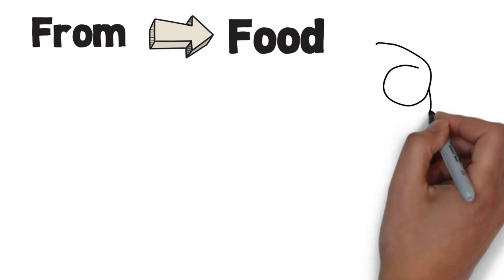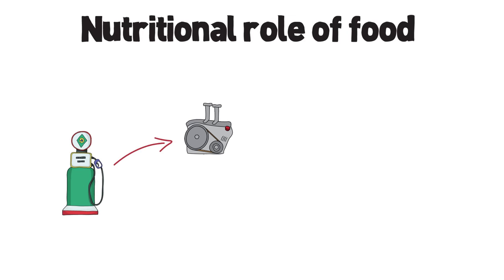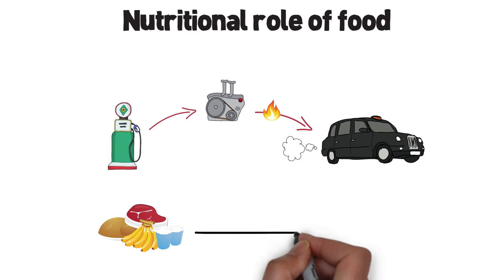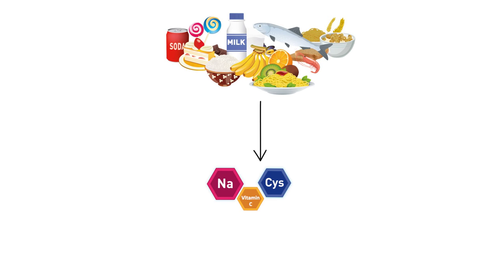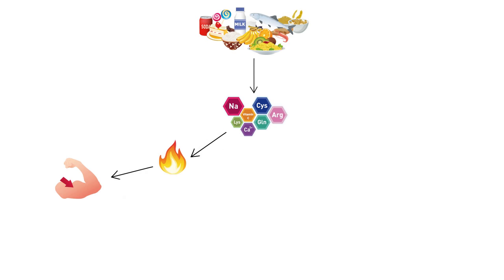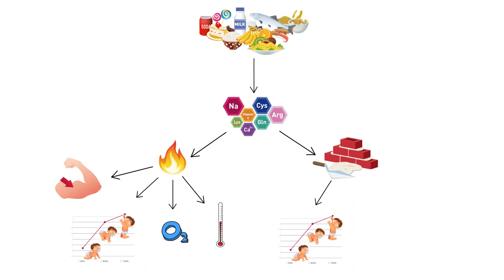From Food to Nutrient. In the same way gasoline powers engines and vehicles, food provides energy to our body. Food is our unique source of energy. Food supplies nutrients, which are substances that provide energy for activity, growth, and all functions of the body such as breathing, digesting food, and keeping warm, as well as materials for growth and the reparation of the body, and for keeping the immune system healthy.